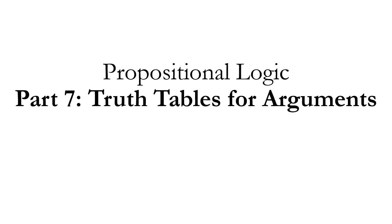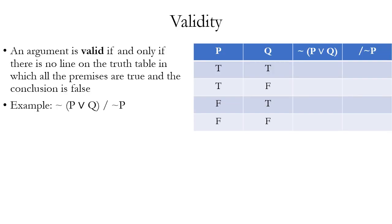Propositional Logic Part 7: Truth Tables for Arguments. In this part, we're going to look at analyzing arguments to see whether they're valid or invalid using truth tables. An argument is valid if and only if there's no line on the truth table in which the premises are all true but the conclusion is false. Let's look at an example of an argument and then test it for validity using this definition.